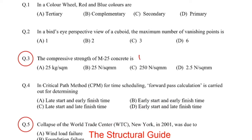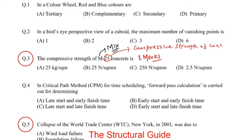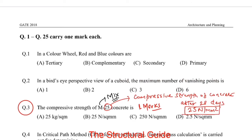This question is for one mark. The question is: the compressive strength of M25 concrete is? 'M' stands for mix, and 25 is the compressive strength of concrete after 28 days. So the compressive strength of M25 concrete is 25 Newton per mm square. The correct answer is option B — 25 Newton per mm square.